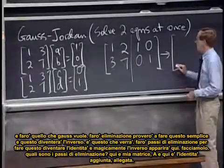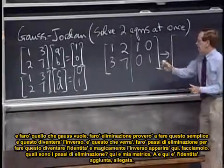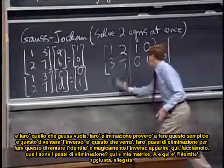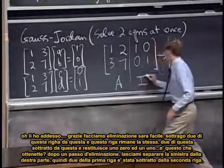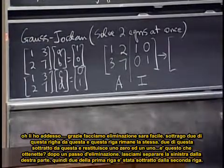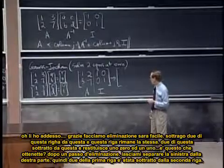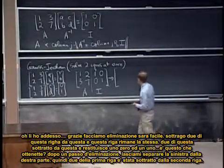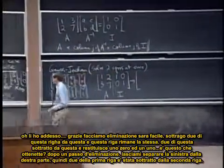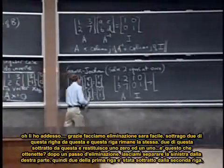Let's do it. So what are the elimination steps? So you see, here's my matrix A, and here's the identity stuck on, augmented on.